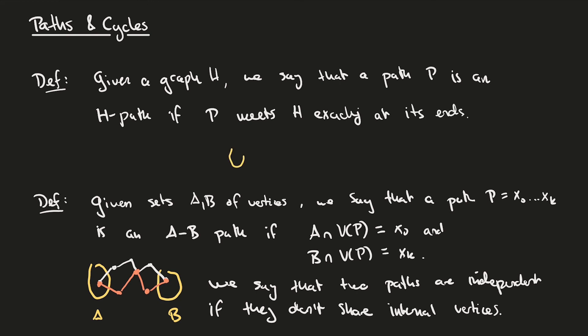For example, if we have some graph H, then an H path would start at some vertex of H, then go outside of H and do something, and then eventually it would return back to H. So this concept is very similar to that of an AB path, just in this case we only have one set instead of two.